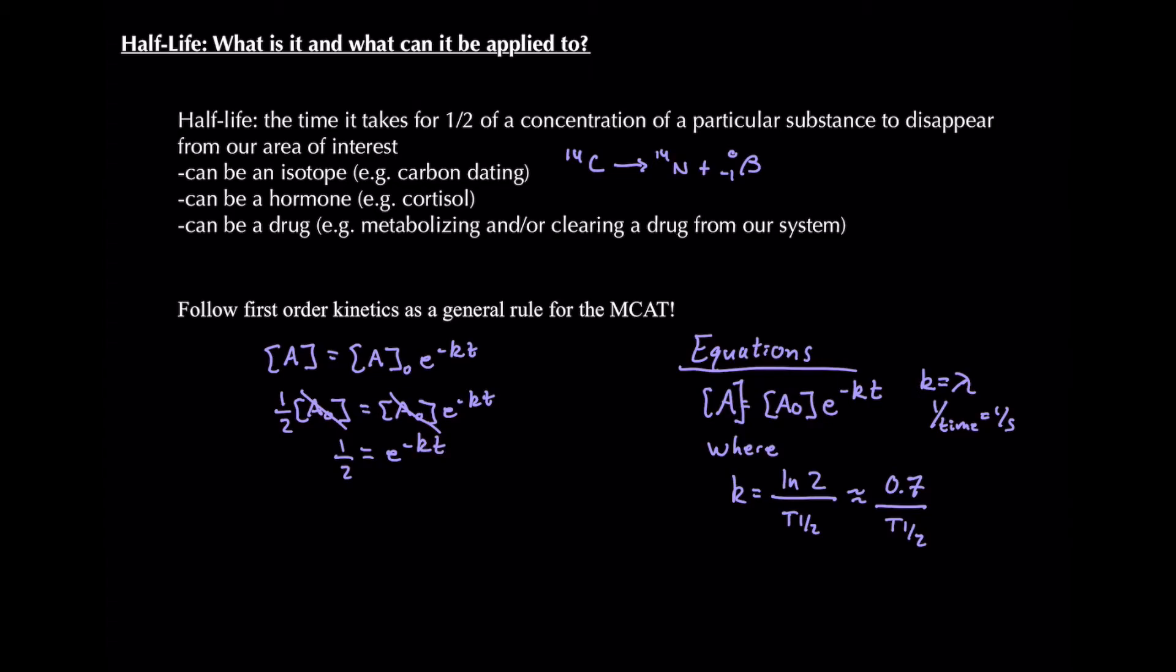From there, in order to solve something that has e^(-kt), we can take the natural log of both sides. So the natural log of one-half is equivalent to the natural log of e^(-kt). And the natural log of e to the something is just that something. So we can write this as natural log of one-half is equivalent to -kt.